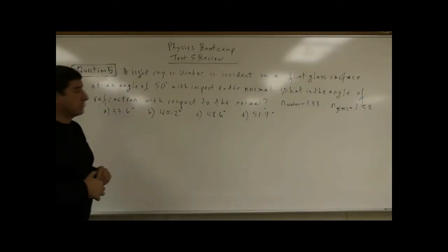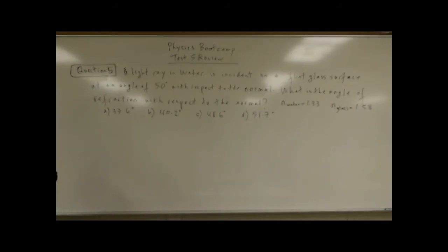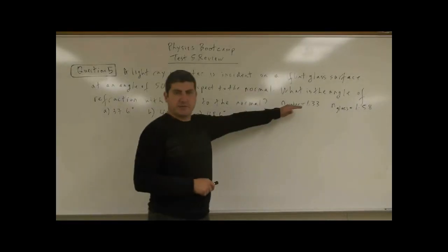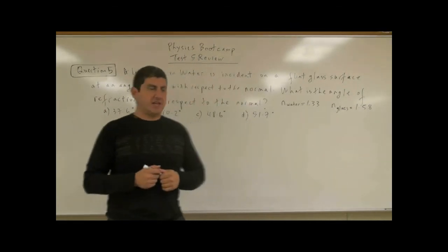We come to question five. It says a light ray in water is incident on a flint glass surface at an angle of 50 degrees with respect to the normal. The question is, what is the angle of refraction with respect to the normal? It gives you the index of refraction of water, 1.33, glass 1.58.